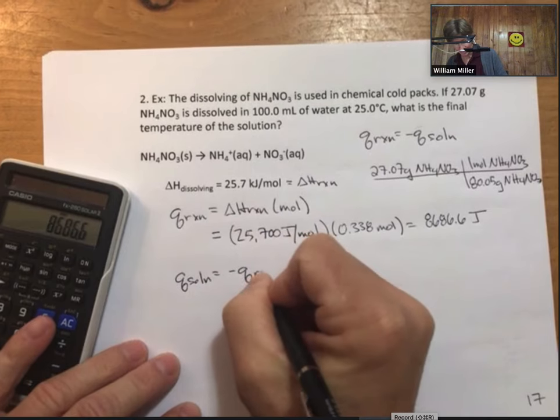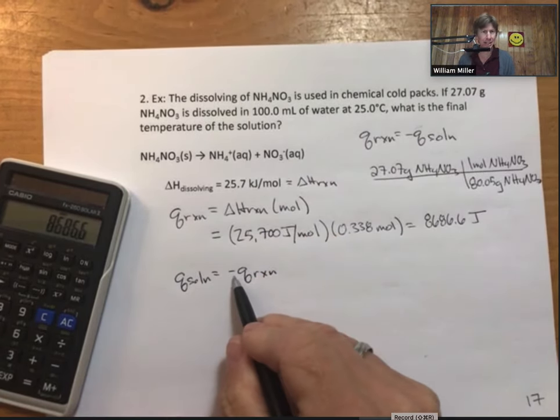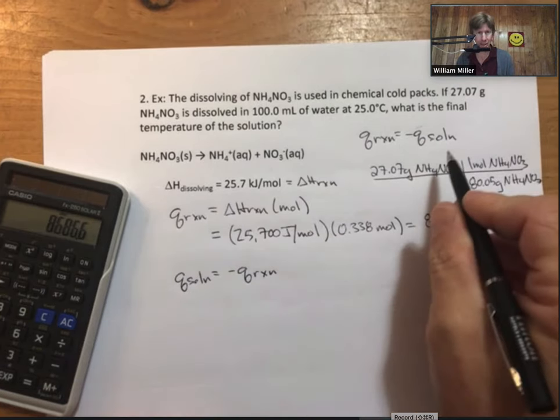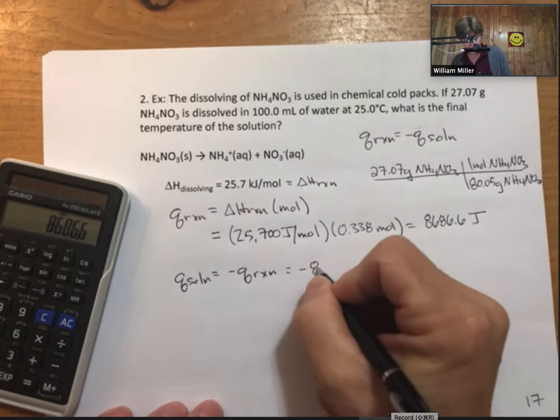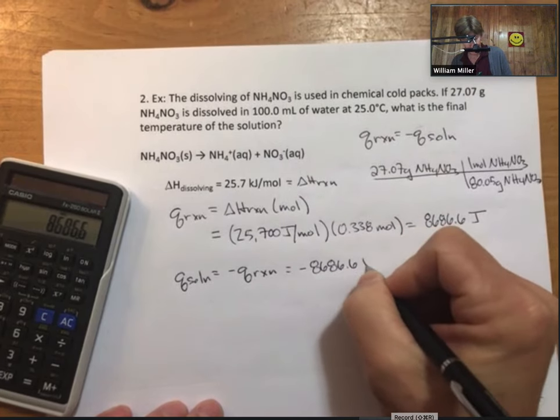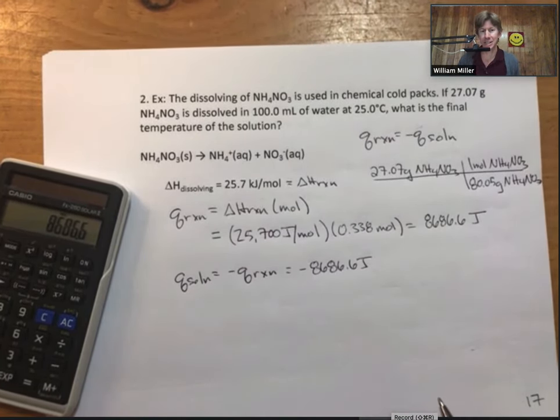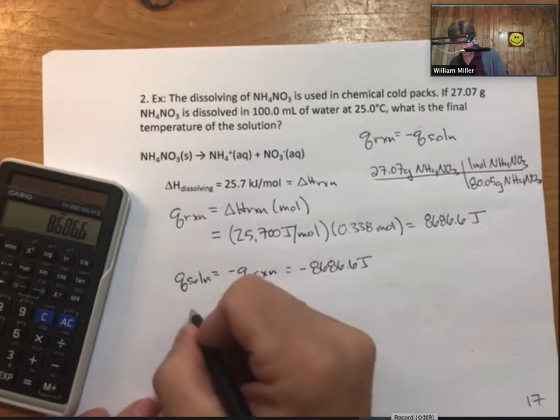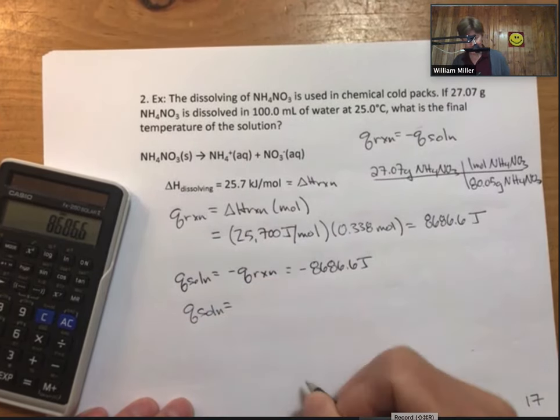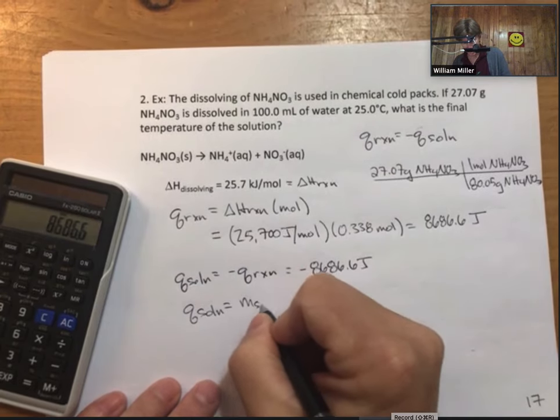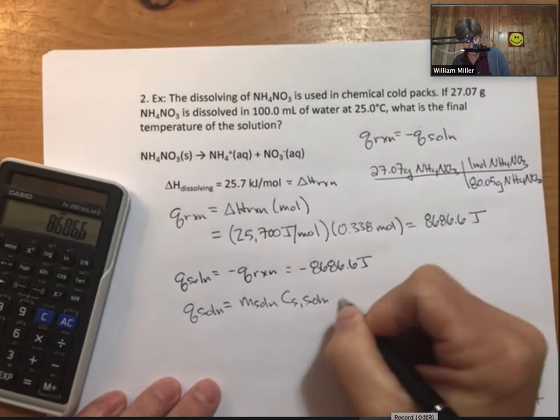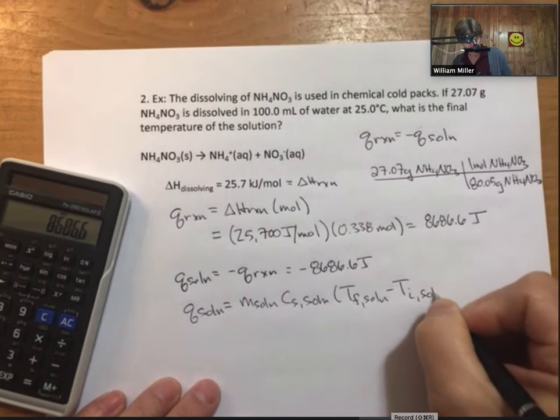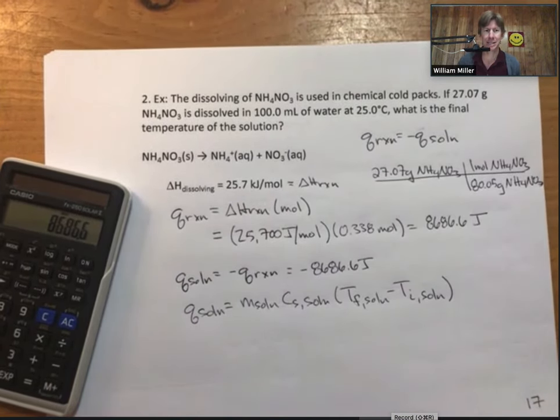As long as there's a minus sign in here, as long as it changes sign going from reaction to solution, either version of this is fine. I'm just going to keep all my sig figs for now, always round my final answer to three sig figs. Now q solution is going to equal mass of solution, specific heat of solution, times T final minus T initial of my solution. Let's plug everything in we know.